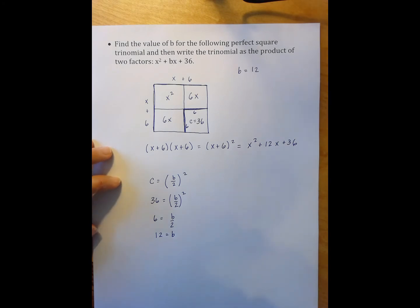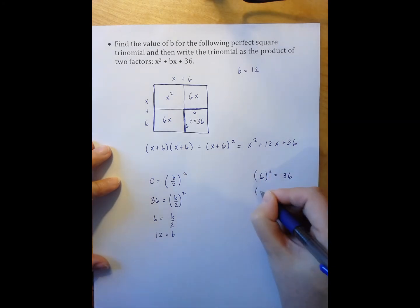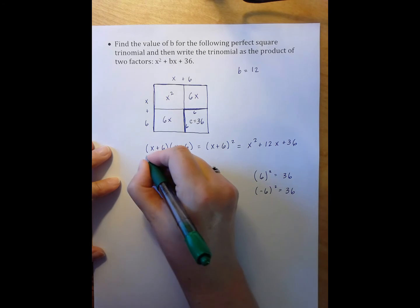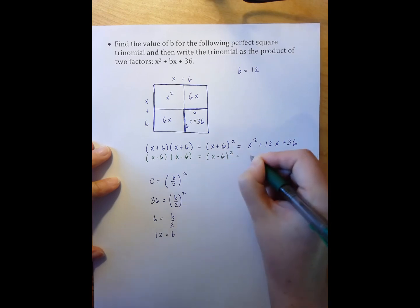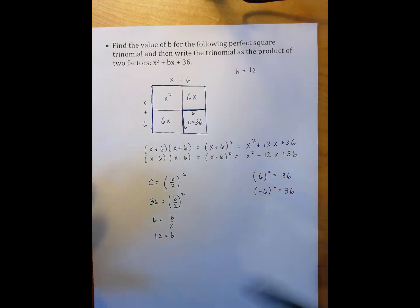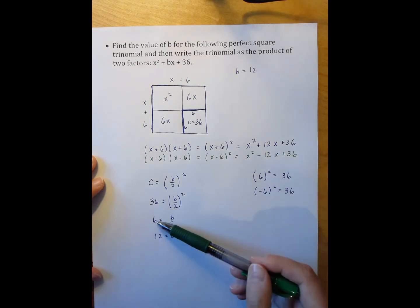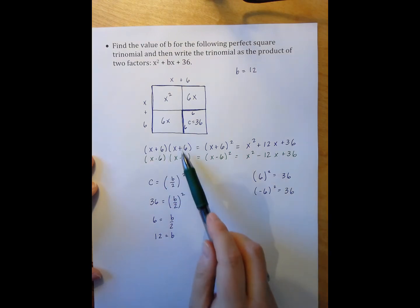Now there's one caveat to all of this, which is that there are actually two numbers that get me 36 if I square them. So I have 6 squared equals 36, but so does negative 6 squared. So it turns out that I have two answers. I either have the answers where my 6s are both positive, or I have the answer where my 6s are both negative. And the reason for that is a little bit complicated. If I looked at my algebra, it would have to do with the fact that 6 squared gets me 36, but so does negative 6 getting me 36. So two possible answers where either the 6 is positive or the 6s are negative.